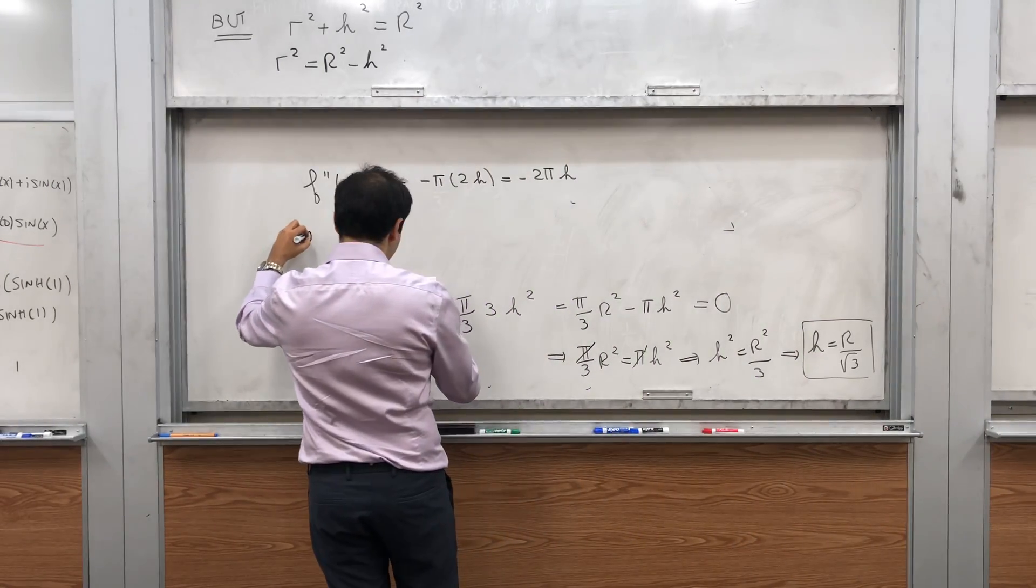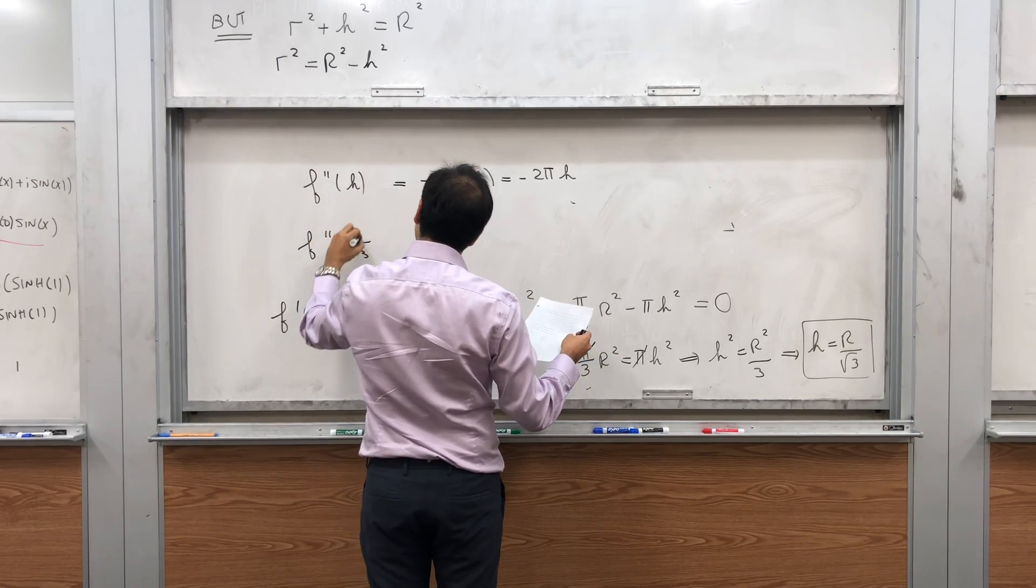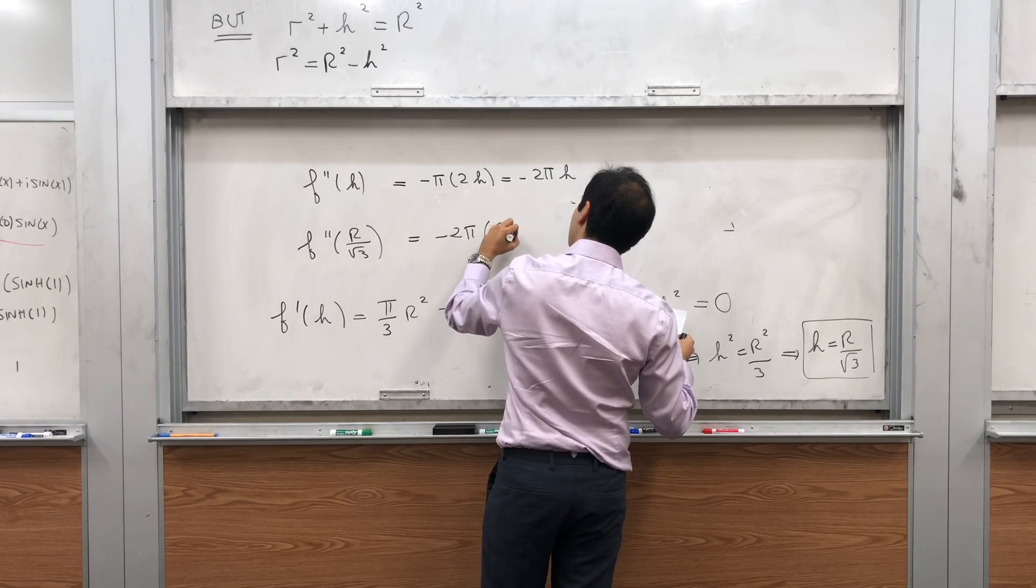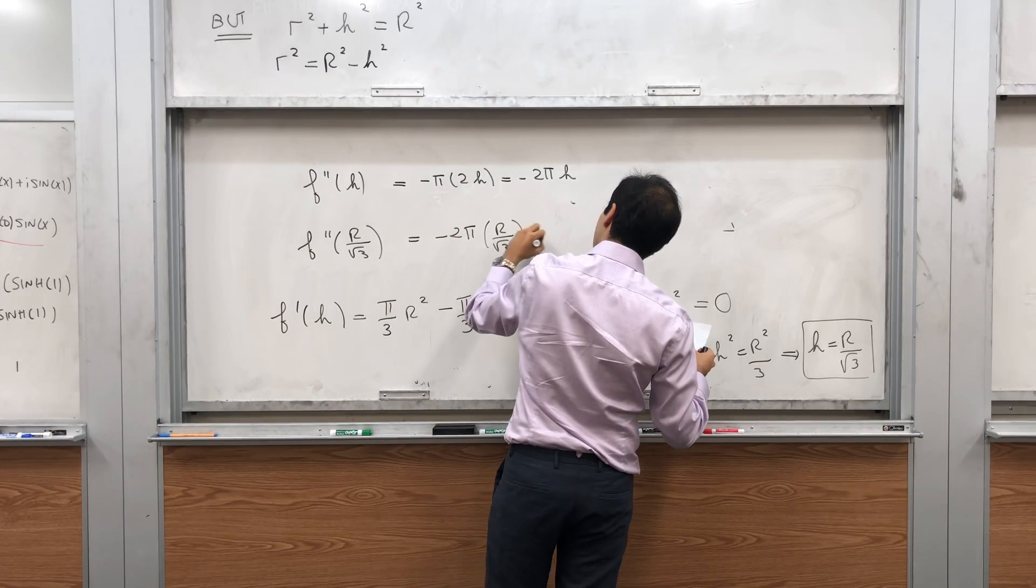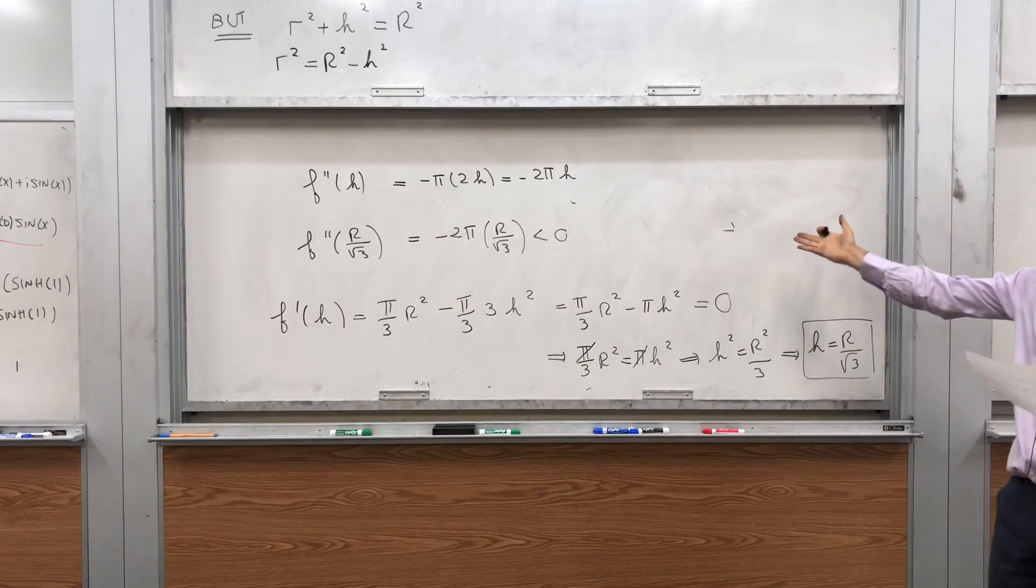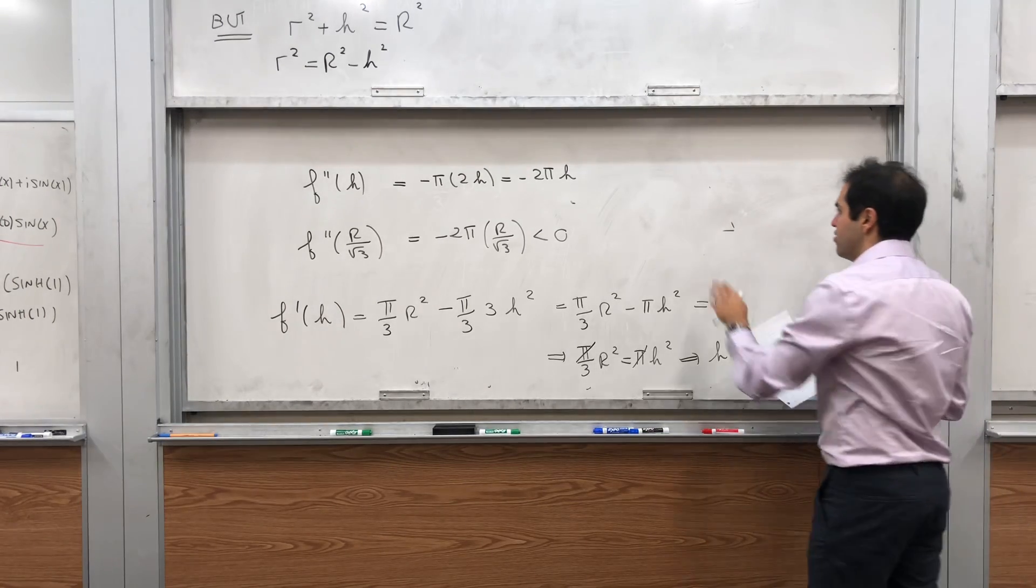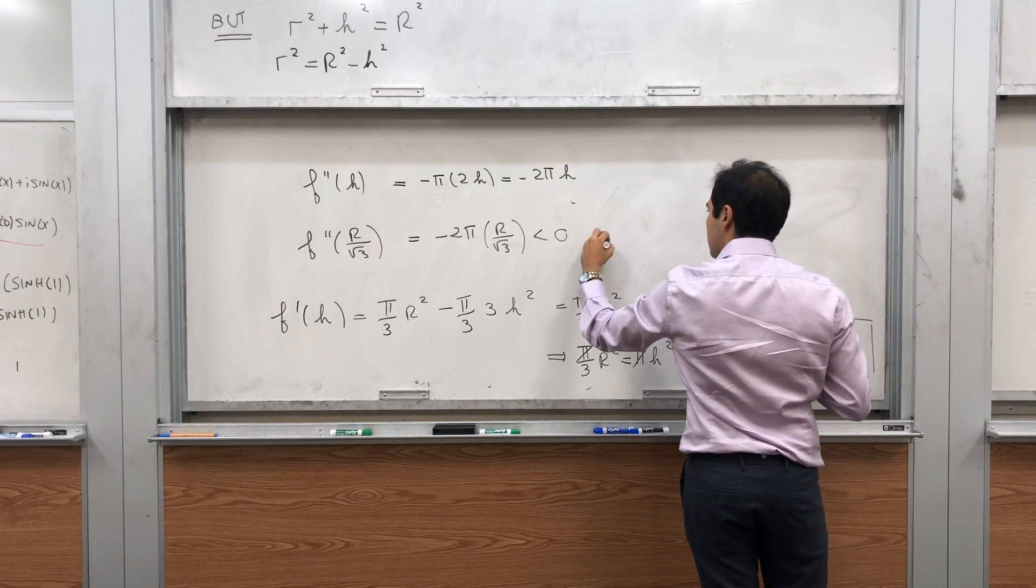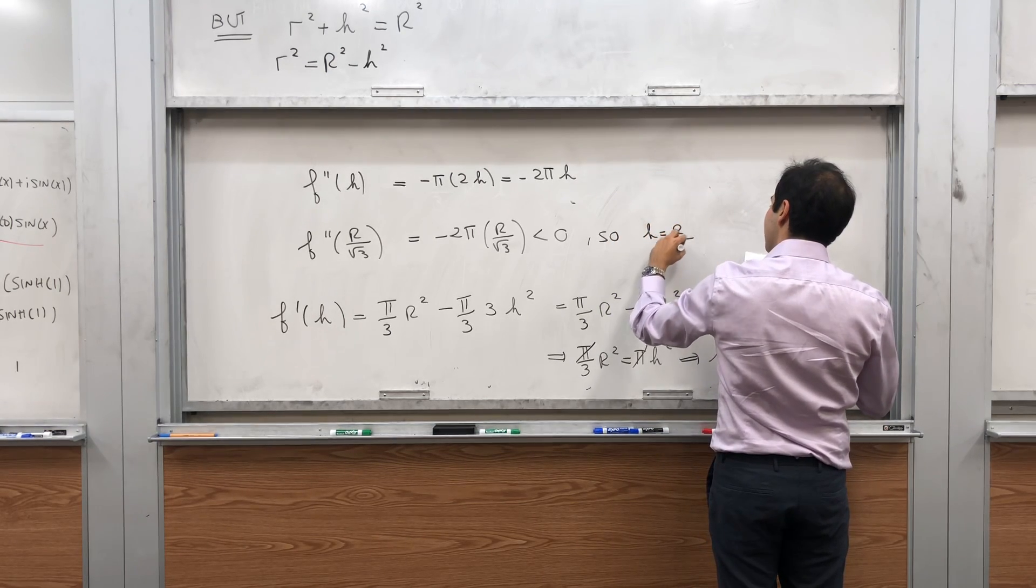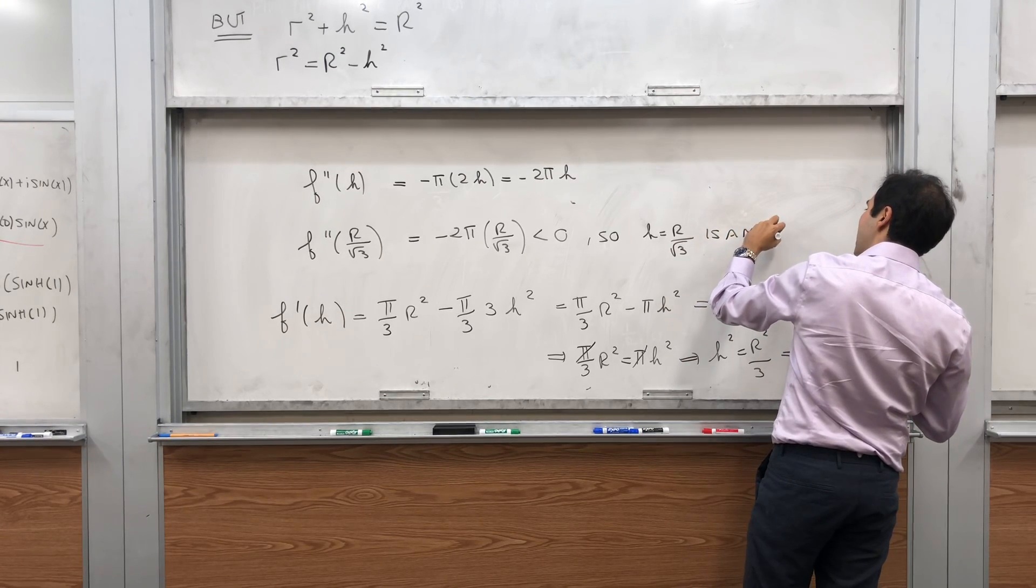So f double prime of r over square root of 3 is minus 2 pi r over square root of 3, which is negative. So in particular, this point, r over square root of 3, at least locally, it's a maximizer. So h equals r, sorry, maximizer, is a maximizer. So a point where it has a maximum.